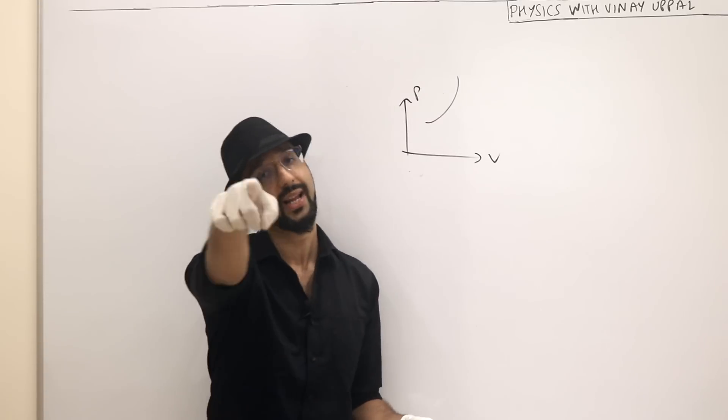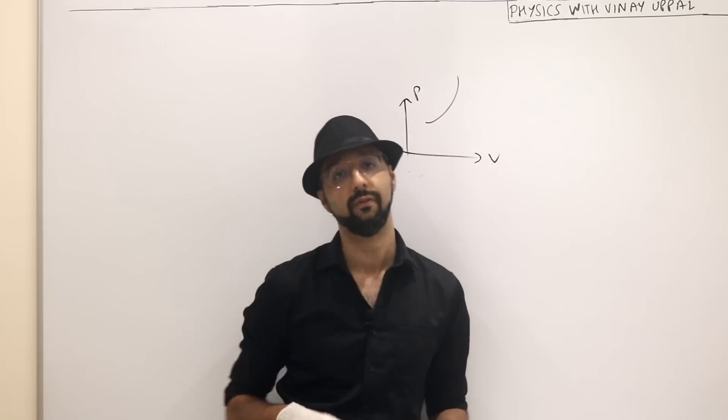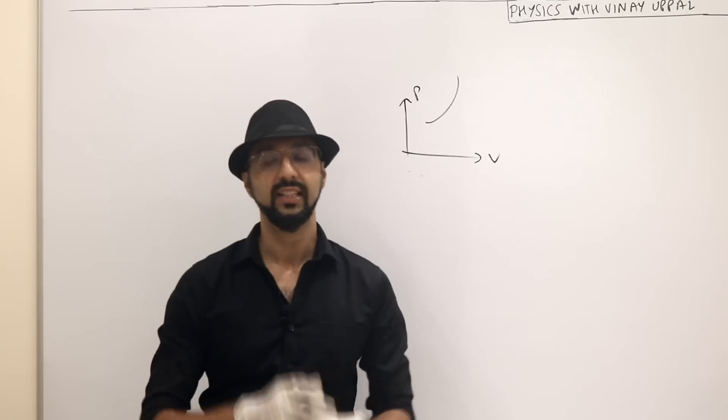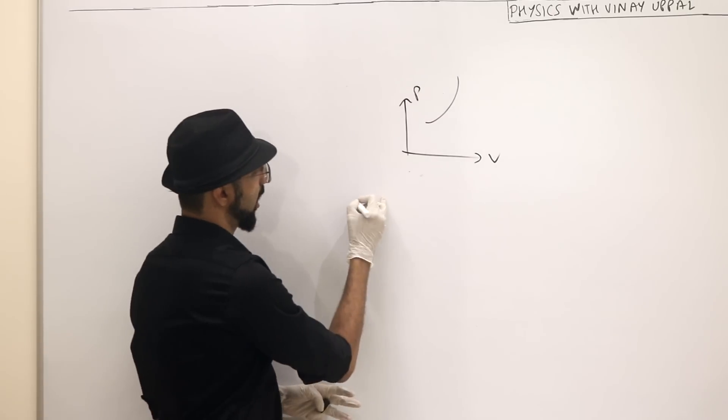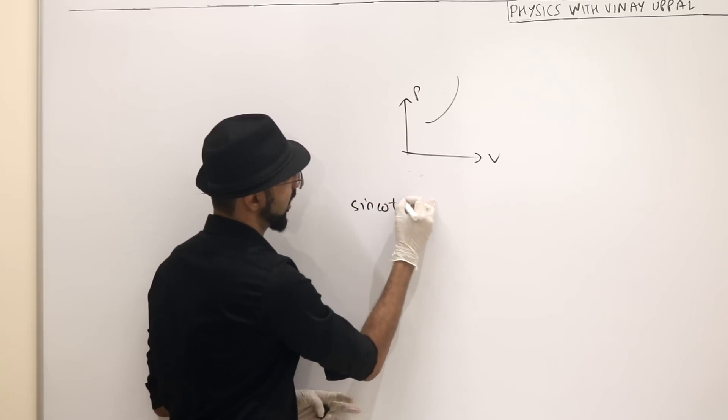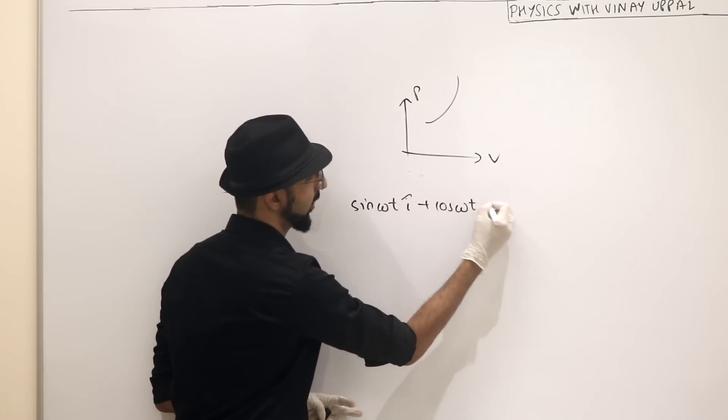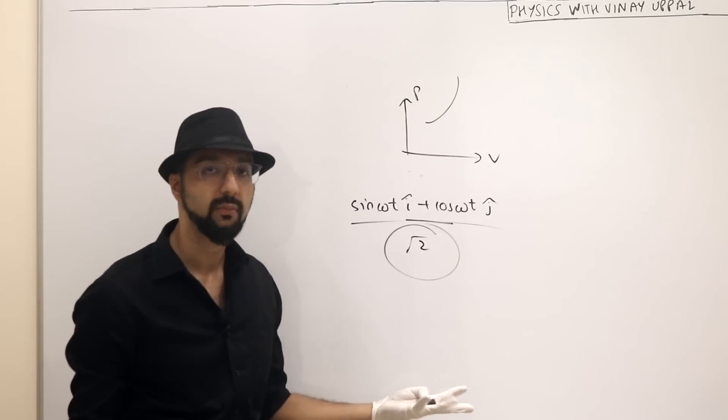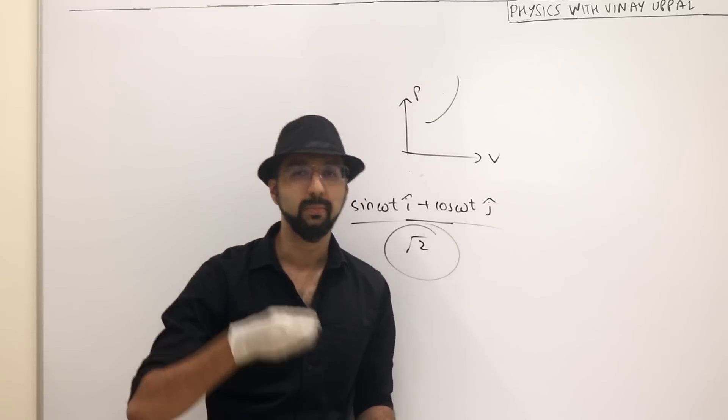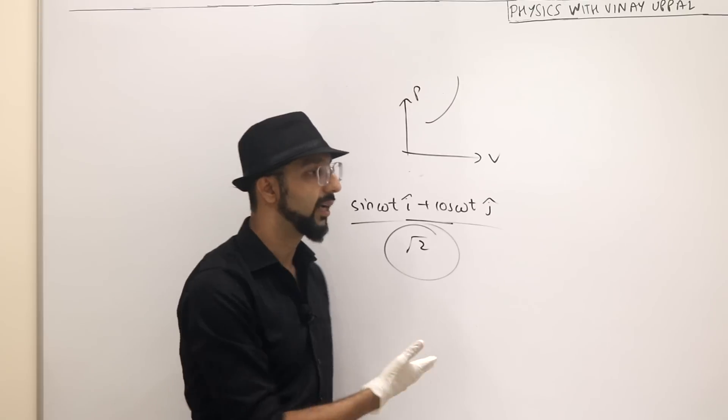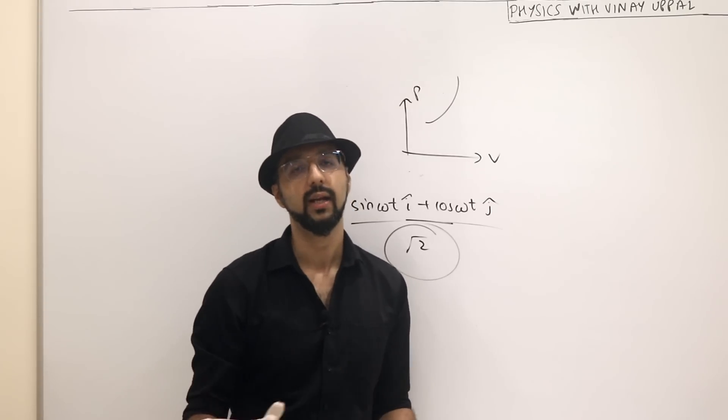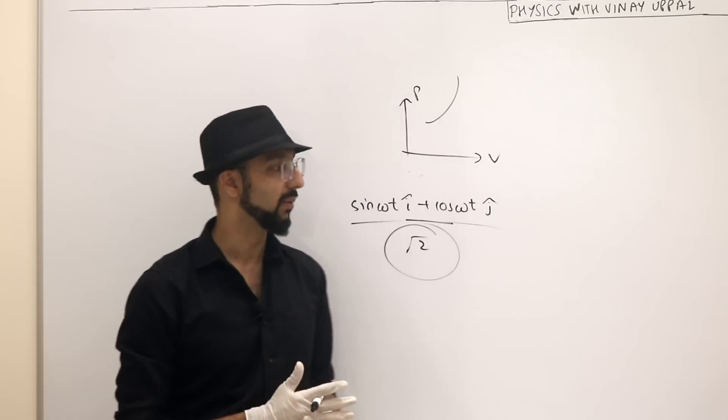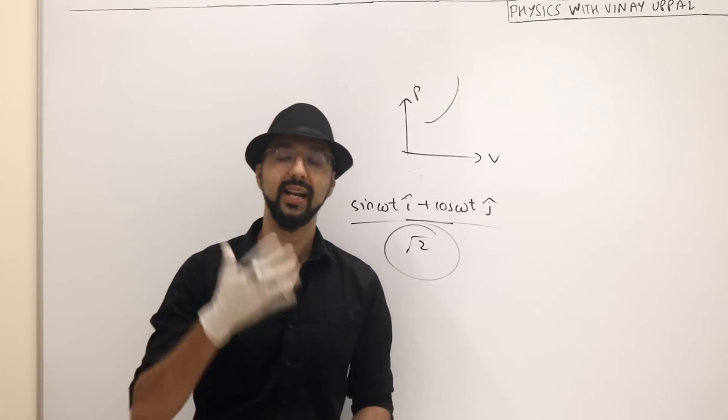And look at another question from JEE 2022 itself. In this match list, there is a unit vector written: sin omega t i cap plus cos omega t j cap. This is my unit vector, but then they divided it by root two. Where is the division by root? It is such an obvious basic mistake which should be corrected. But this is absolutely unacceptable.